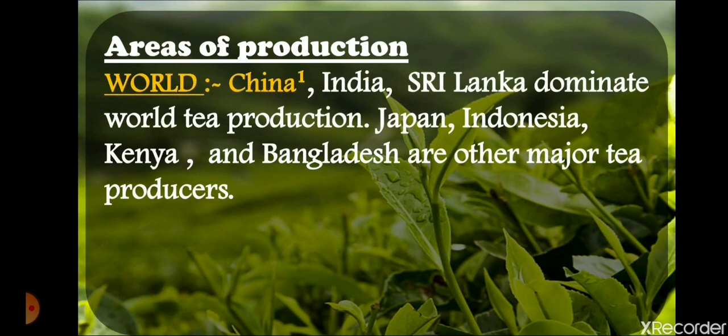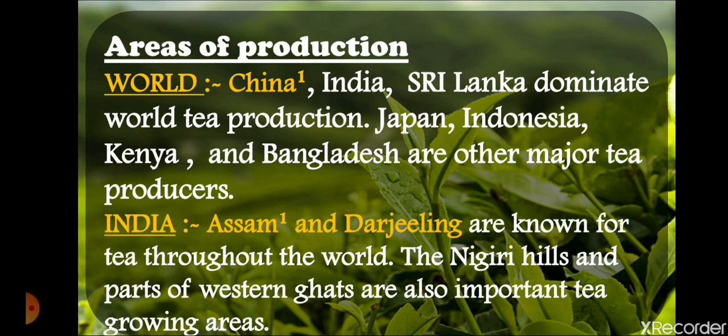For area of production of tea, China is the leading producer worldwide, followed by India and Sri Lanka, which dominate world tea production. Other major producers include Japan, Indonesia, Kenya, and Bangladesh. In India, Assam is the leading producer of tea, and Darjeeling is known for tea throughout the world. The Nilgiri hills and the western ghats region also produce good quality tea.